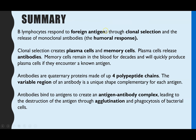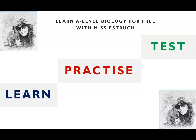In summary: B-lymphocytes respond to foreign antigens, and through clonal selection release monoclonal antibodies — that is the humoral response. Clonal selection creates plasma cells and memory cells; plasma cells release antibodies, while memory cells remain in the blood for decades and can rapidly produce plasma cells upon re-encountering the antigen. Antibodies are quaternary proteins made of four polypeptide chains; their variable region is unique in shape, and they bind antigens to form antigen-antibody complexes, leading to destruction through agglutination. Visit missestrick.com for practice questions.